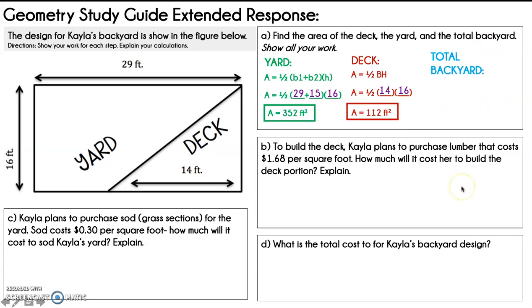So to get the area of the total backyard, there's two ways you can do this. You can say the total backyard is a rectangle, so I'm going to do 29 times 16, or you can take the area of the yard, which was a trapezoid, plus the area of the deck, which was the triangle. So we have 352 feet squared plus 112 feet squared, and we get that the area of the total backyard is 464 feet squared. You can do it either way.